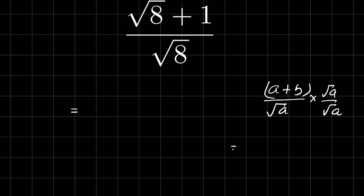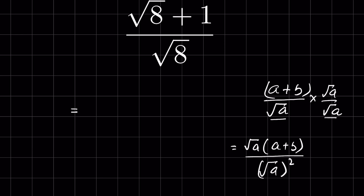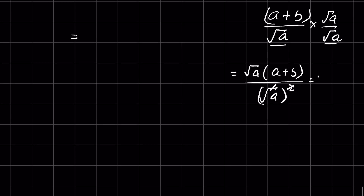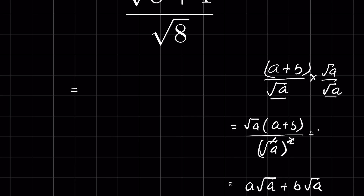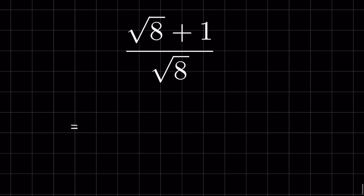This can then be solved as square root of a times (a + b) upon square root of a times square root of a. Square root of a squared — we can remove the square root with the square — so it equals a times square root of a plus b times square root of a upon a. Using this property, we can solve our problem. Let's multiply and divide by the square root of 8.